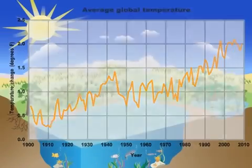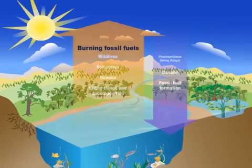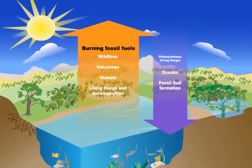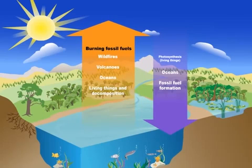It's a big problem, but we can solve it. One big part of the solution will be to reduce our carbon dioxide emissions by burning less coal, oil, and gas. This will help bring the carbon cycle closer to its natural balance.